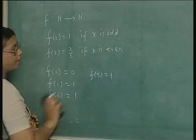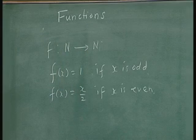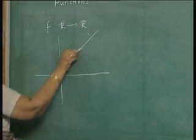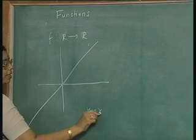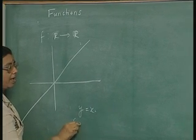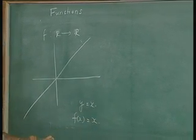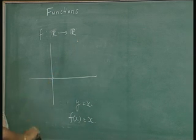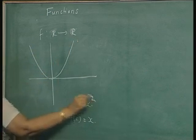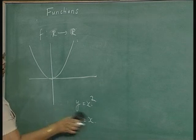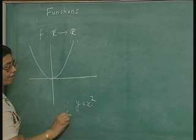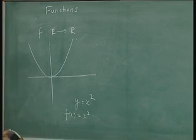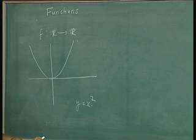Any graph also represents a function. If you take the set of real numbers and the real plane and draw a line, this represents the function F(x) = x. If you take some graph like a parabola, that represents y = x², which is the function F(x) = x² from the set of real numbers to the set of real numbers. Like that, you can represent real functions from R to R as a graph in the two-dimensional plane.